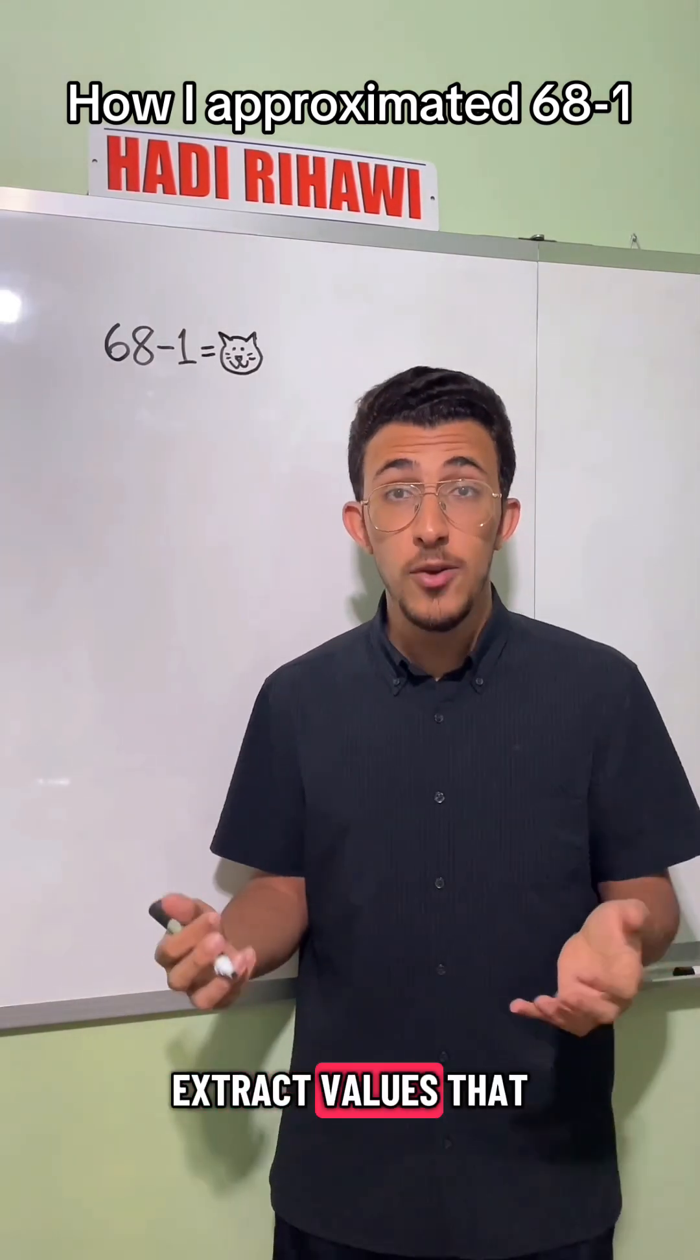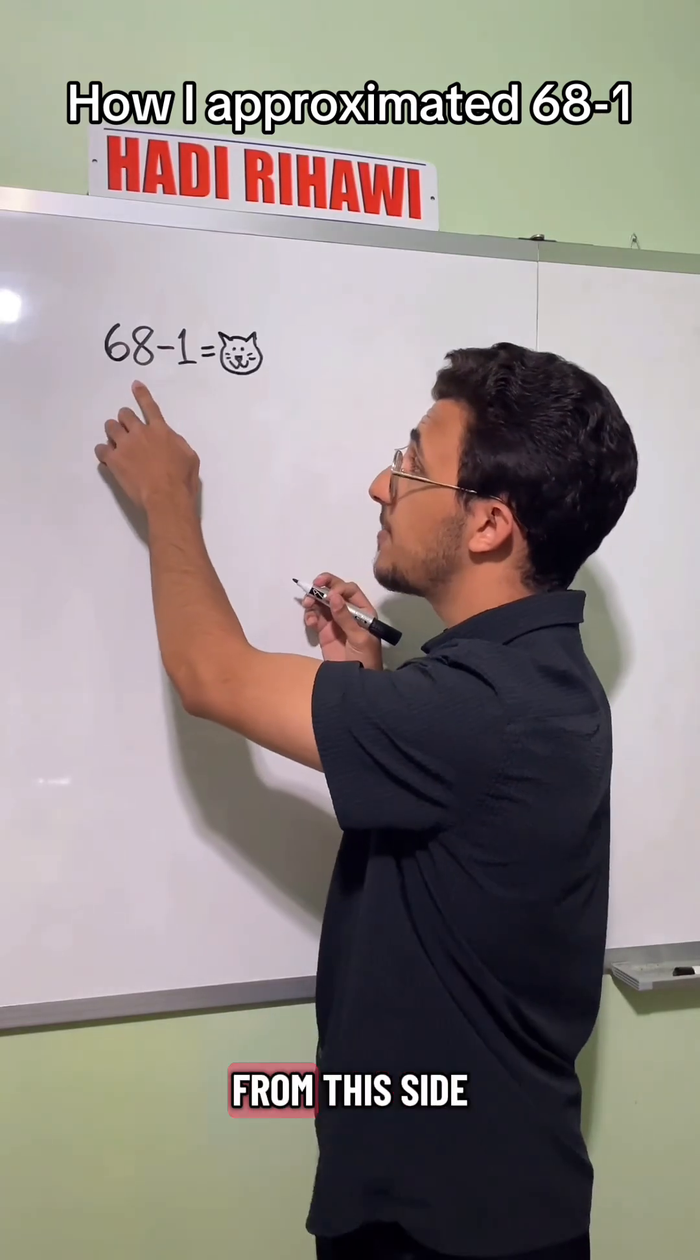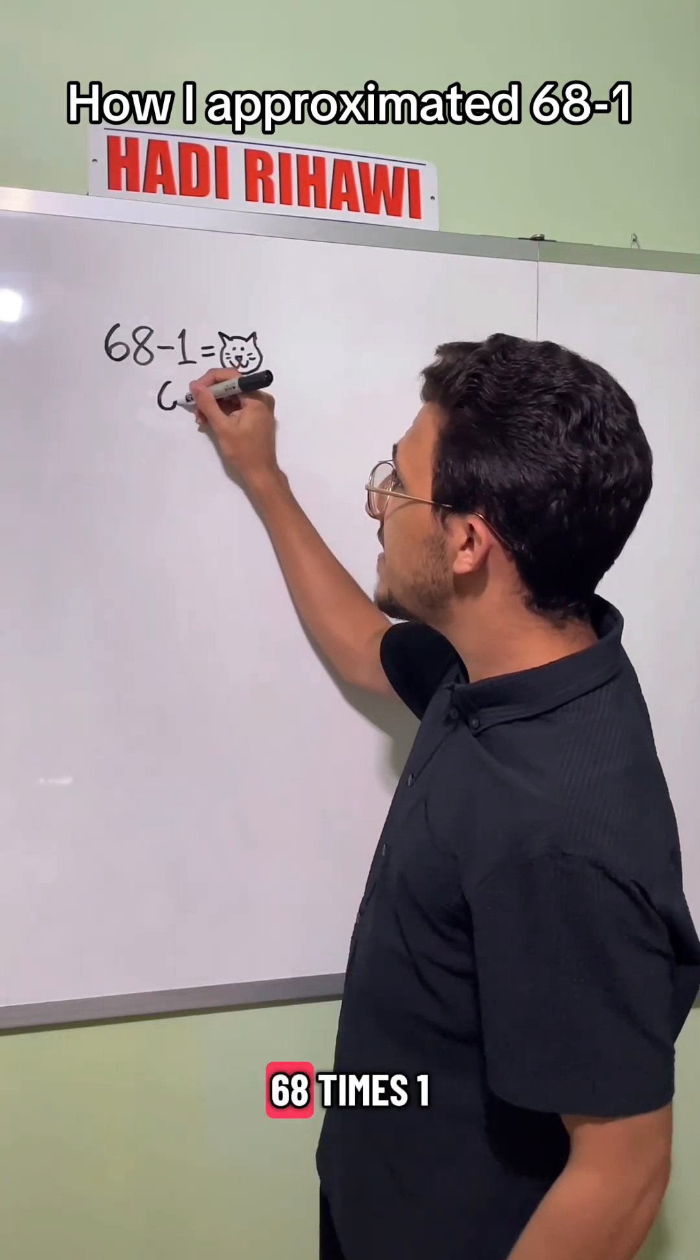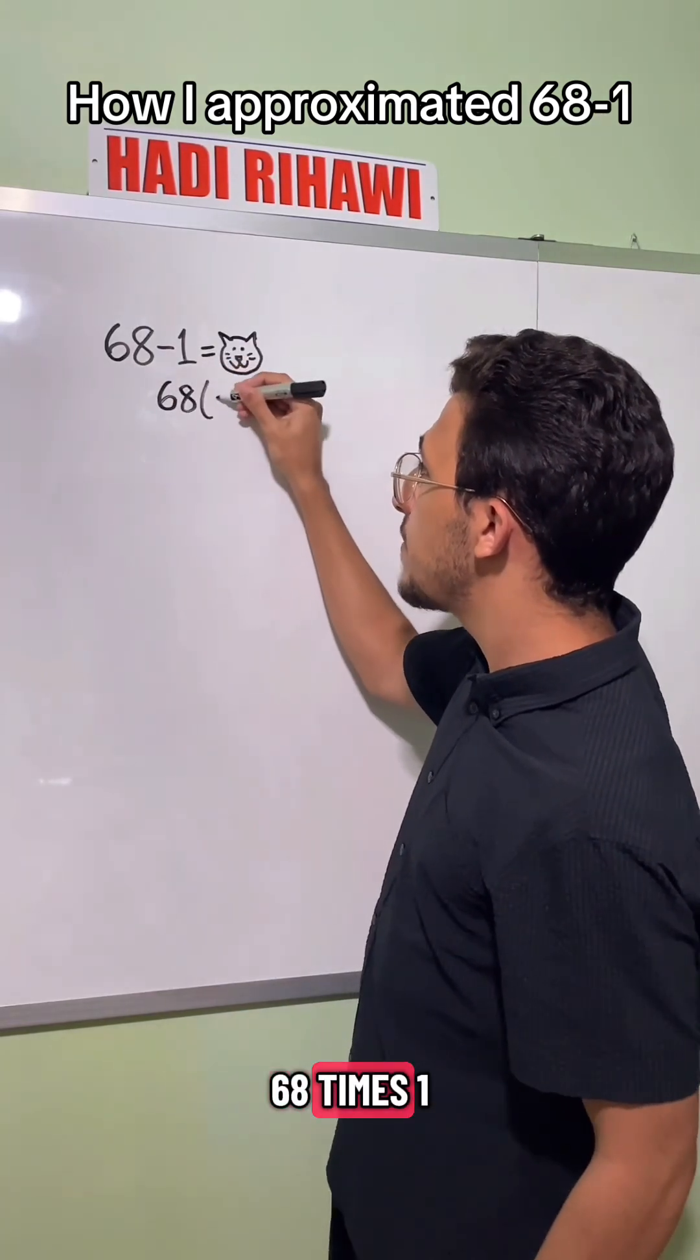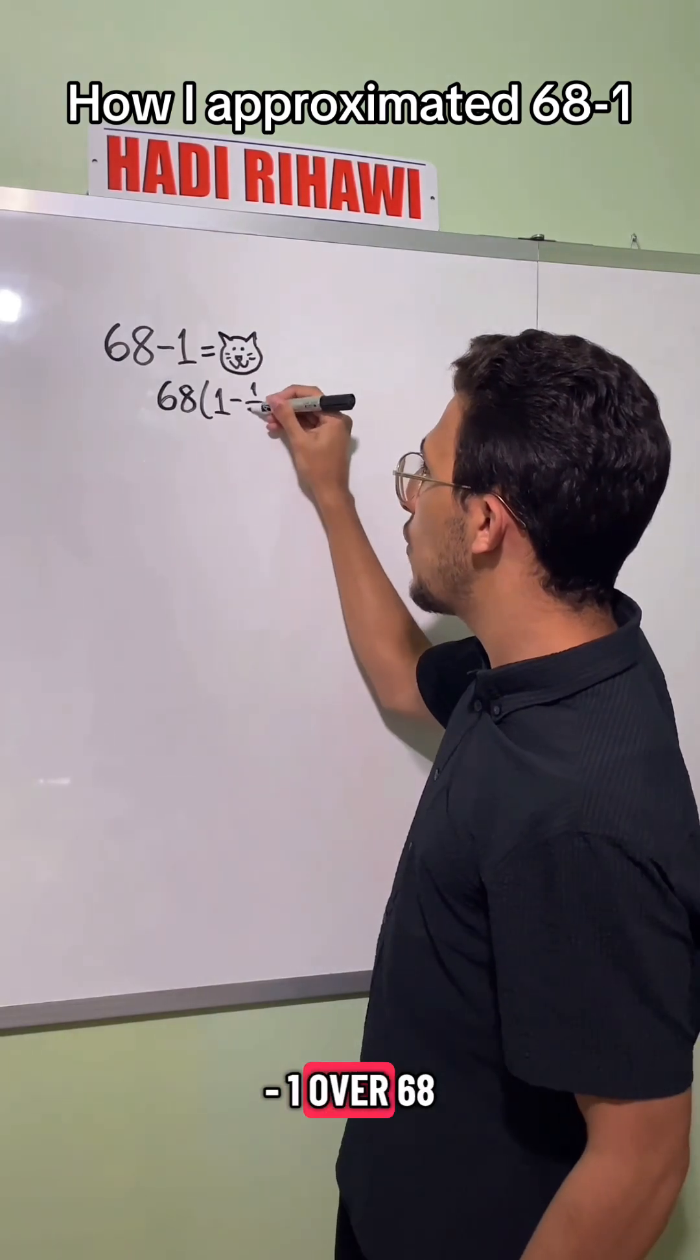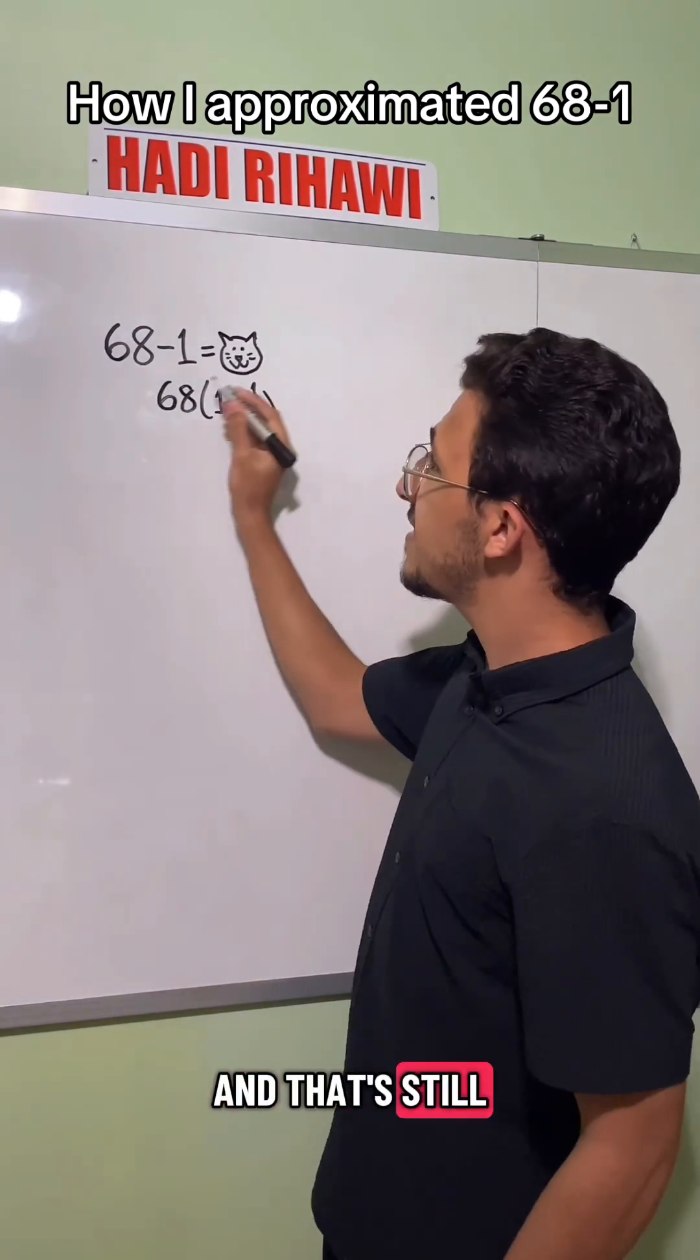In order to extract values that are easy to approximate, I first factor out a 68 from this side, so we'll be left with 68 times 1 minus 1 over 68, and that's still equal to cat.